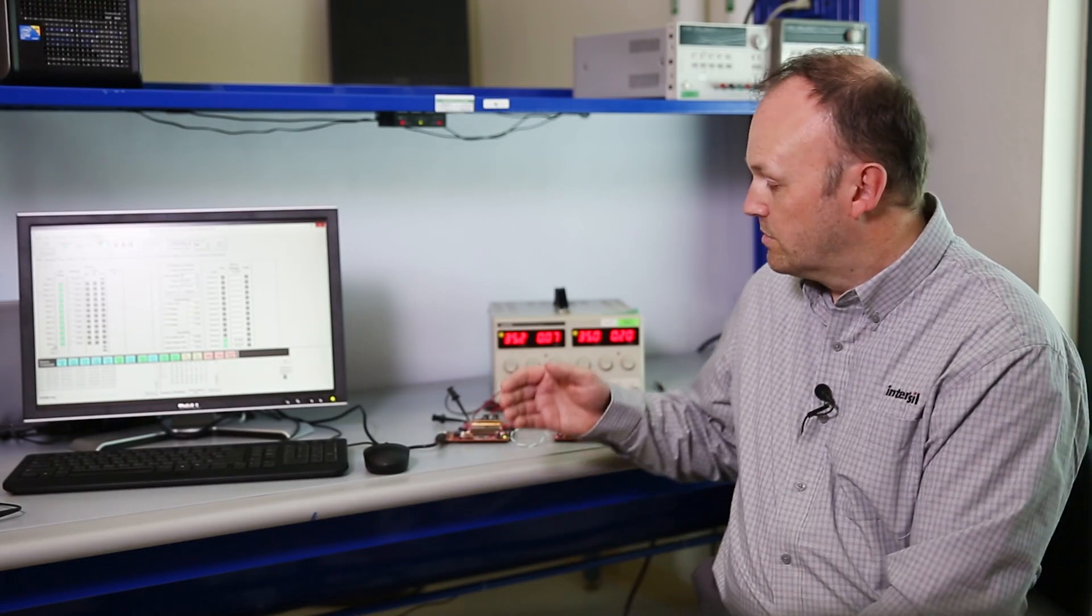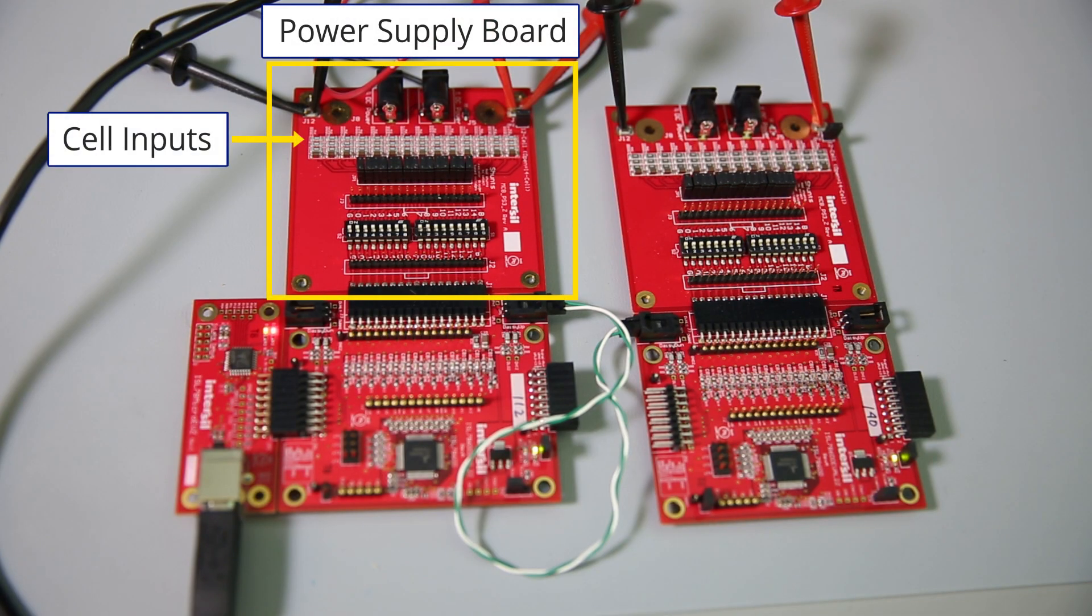The power supply board simulates the individual cell inputs and removes the need to have an actual cell stack. It's a resistive divider which takes the supply voltage from a power supply and it divides it down into the individual cell voltages.